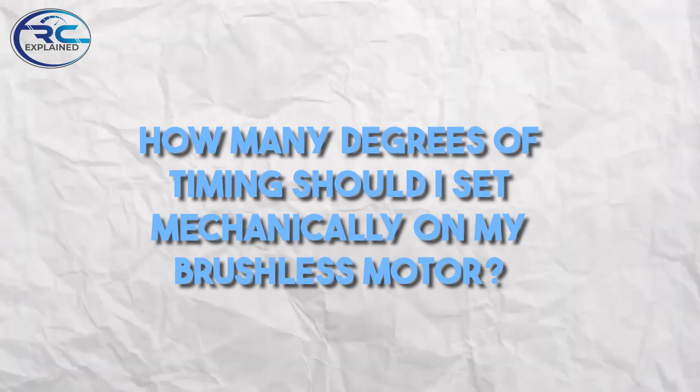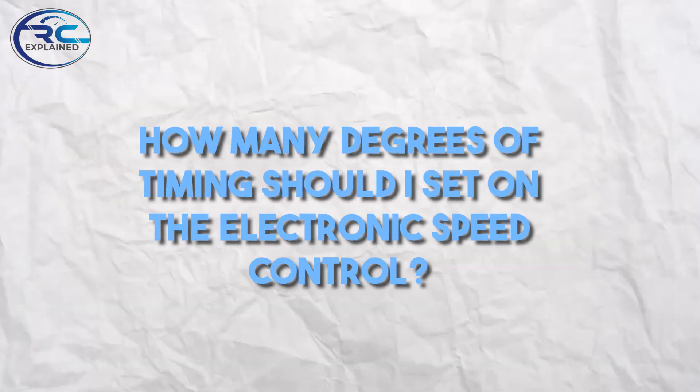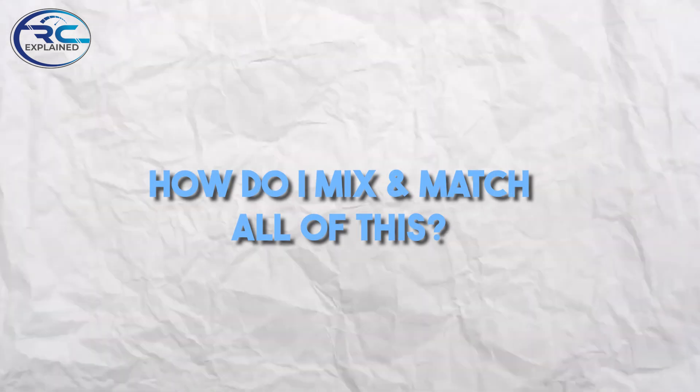Now a lot of the questions that I'm getting is how many degrees of timing should I set mechanically on my brushless motor? How many degrees of timing should I set on the electronic speed control? How do I mix and match all of this and make it make sense for my setup? My recommendation is to set your electronic speed control to function and behave in a way where it mimics a sensorless brushless motor.